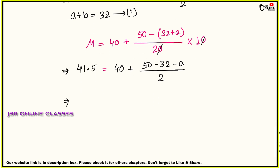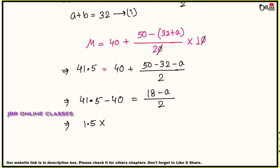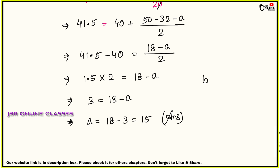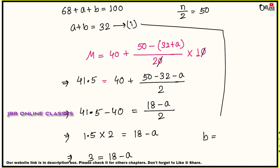Solving: 41.5 − 40 = 1.5. So 1.5 = (18 − a)/28 × 10. Multiply both sides by 28/10: 1.5 × 2 = 18 − a → 3 = 18 − a → a = 15. From equation a + b = 32: b = 32 − 15 = 17. So a = 15 and b = 17. Sum number 17 is complete.